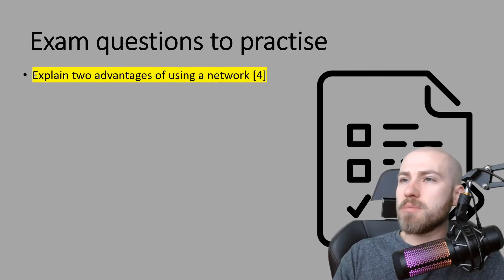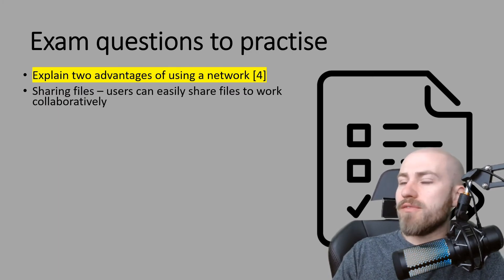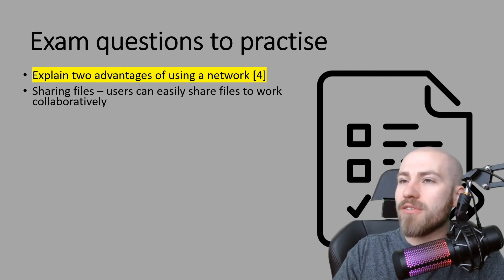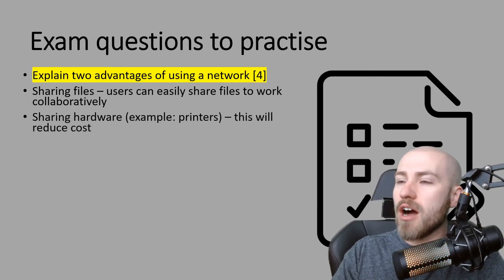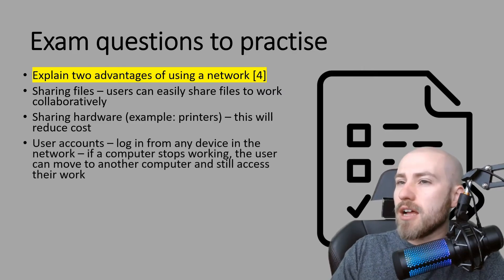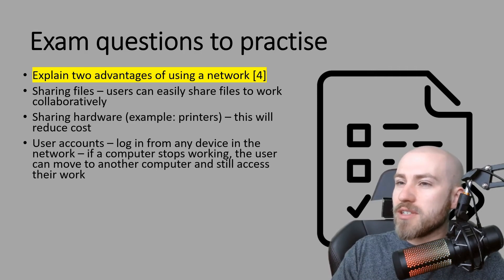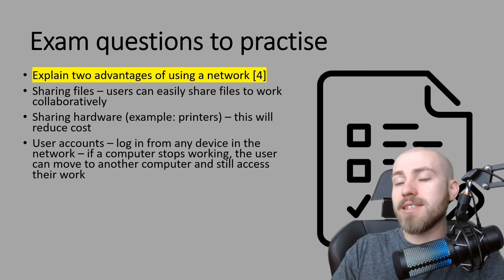For explain two advantages of using a network: first, sharing files — users can easily share files to work collaboratively. That gives one mark for 'sharing files' and the explanation gets the second mark. Second, sharing hardware — for example printers — this will reduce cost. Third, user accounts — log in from any device on the network. For more detail, you could add: if a computer stops working, the user can move to another computer and still access their work.